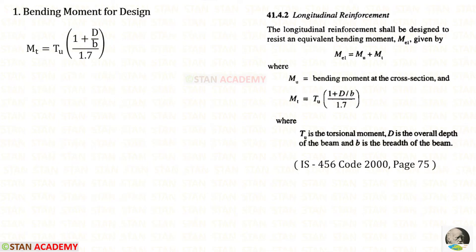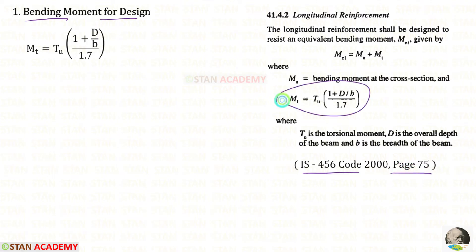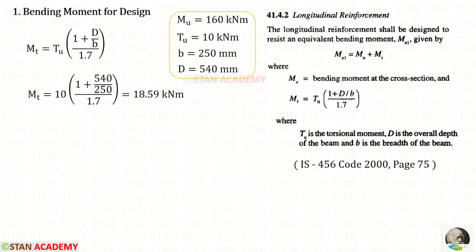The first step in the design is to find the bending moment for design. In the IS 456 code book, we have to open page number 75. Using the formula on that page, we can find the moment Mt. When we apply all the values for Mt, we will get 18.59 kilo Newton meter.